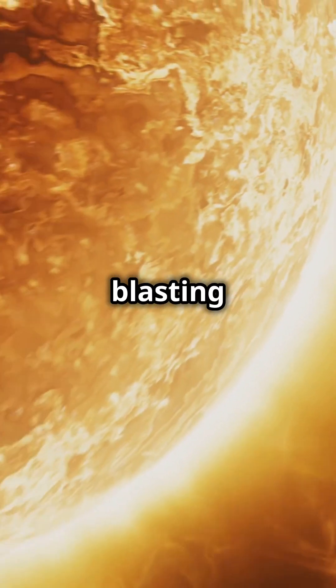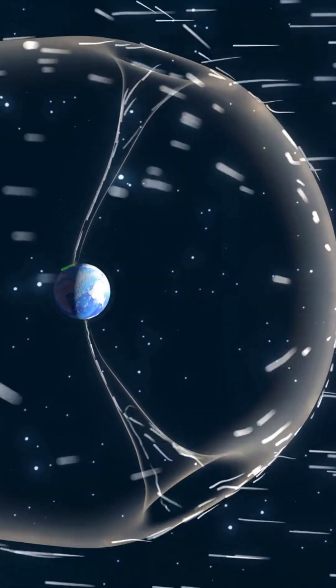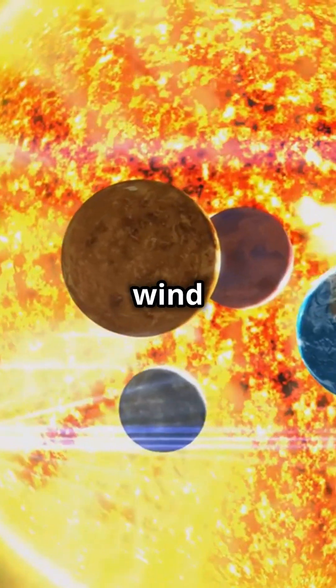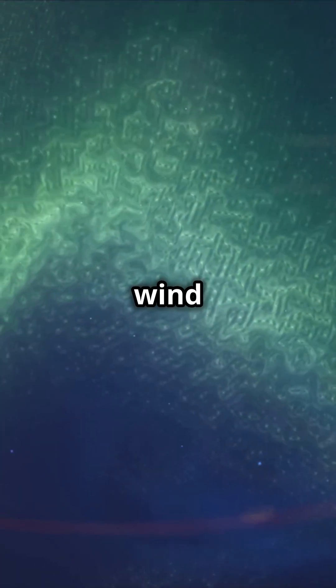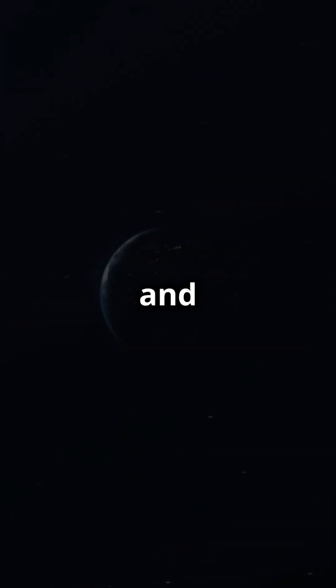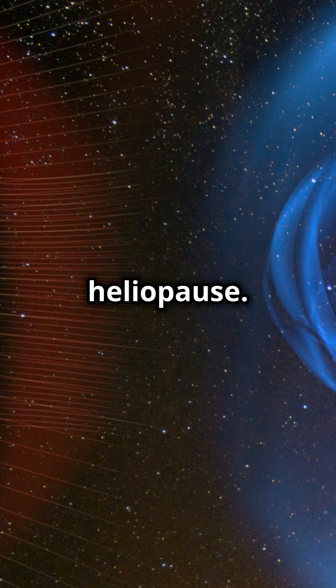Picture the sun blasting out a wind of charged particles. That's the solar wind. Now imagine this wind traveling far, really far, until it meets a stronger wind coming from other stars. The point where these winds clash and neither can push any further is called the heliopause.